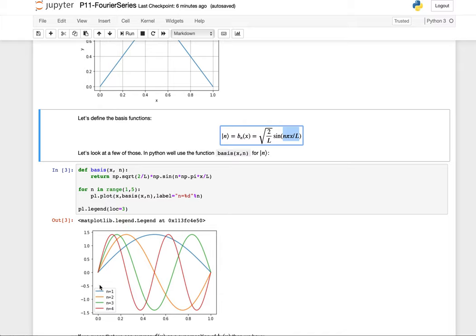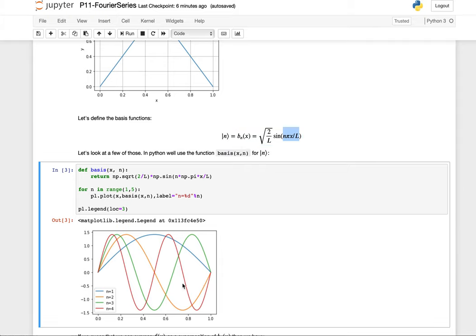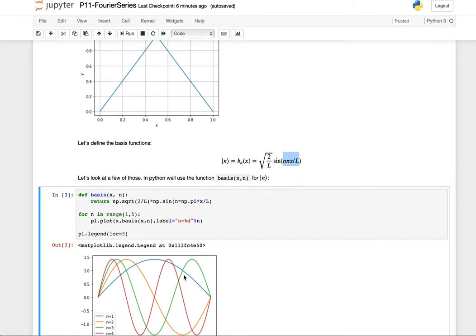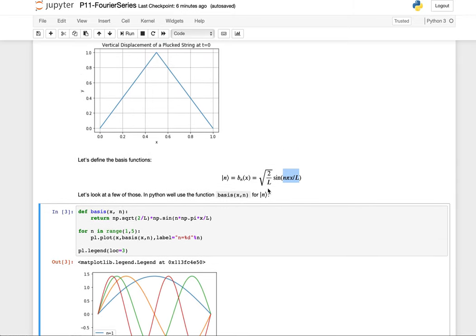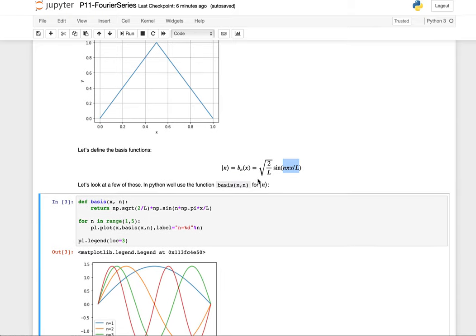So the n equals one case would be one pi, n equals two is this orange, that would be two pi from here to here, and so on. So these are the sine functions that start at zero and end at zero in a finite length of the string. And why is this crazy square root of two over l here? Well, it turns out we want to make these guys in such a way that when I take the dot product of one basis function with itself, I get one. So this is a normalization factor that ensures that these are normalized basis functions.